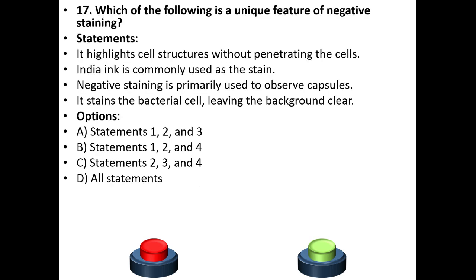Seventeenth question. Which of the following is a unique feature of negative staining? Statements: It highlights cell structures without penetrating the cells. India ink is commonly used as the stain. Negative staining is primarily used to observe capsules. It stains the bacterial cell, leaving the background clear.